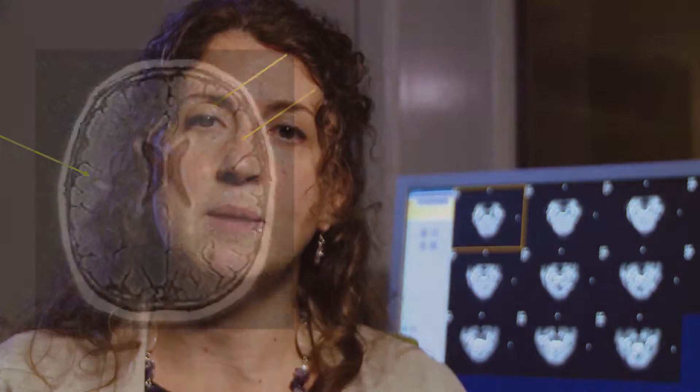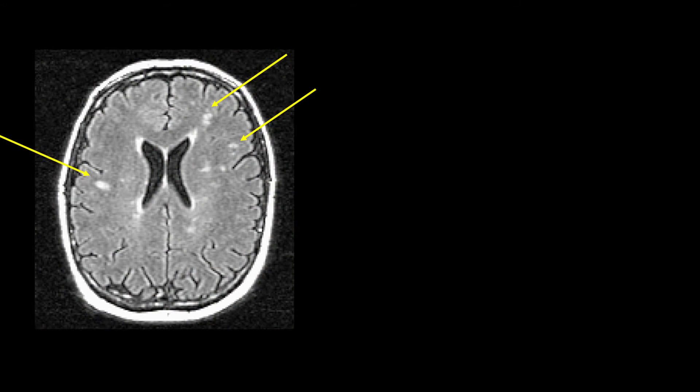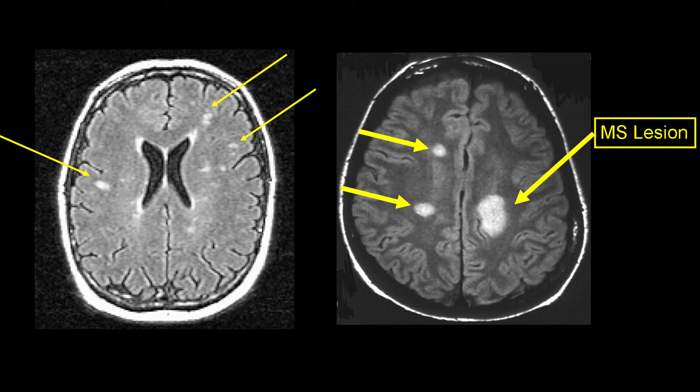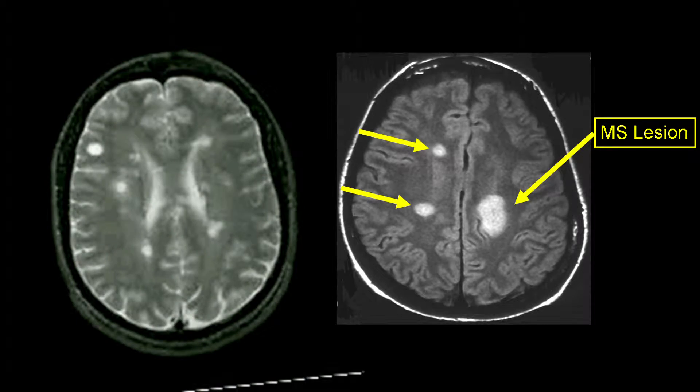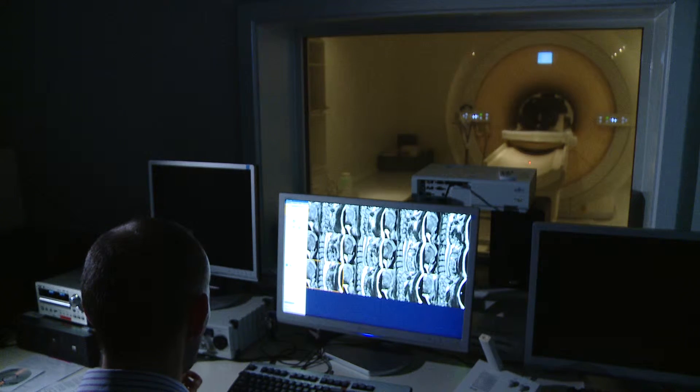The majority of people with MS present with acute neurological symptoms and some of them over time will have further clinical attacks. At the moment we are not able to identify who and when people are going to have further problems. The aim of this project is to use machine learning techniques applied to imaging and clinical data to automatically predict people who are going to have MS.